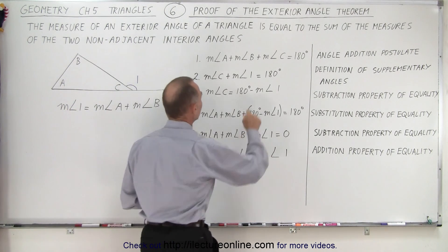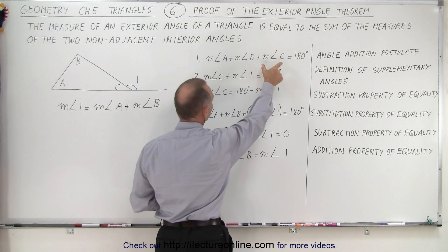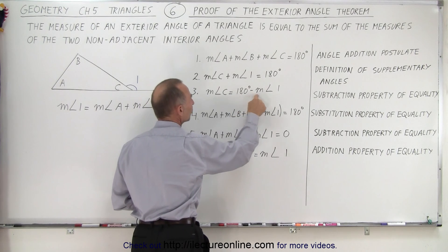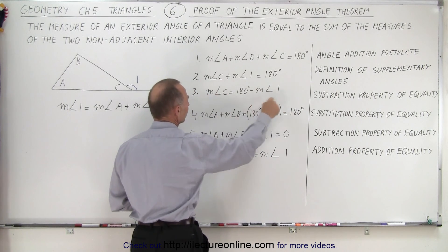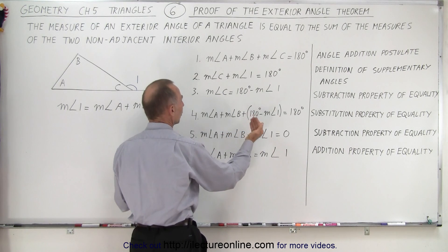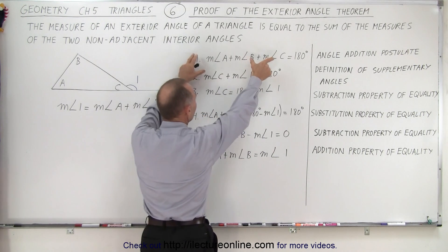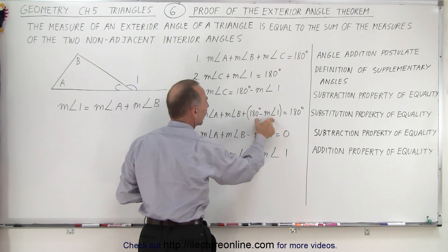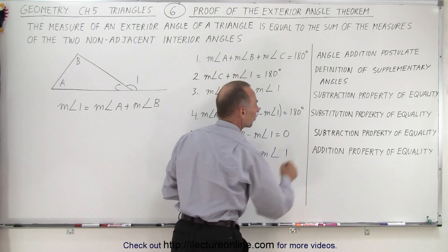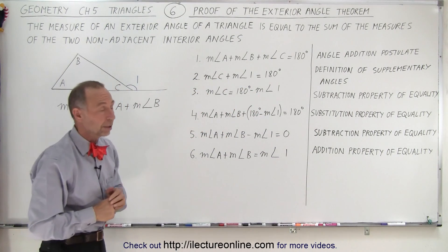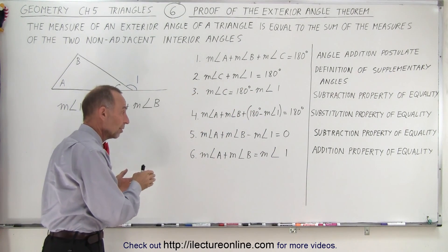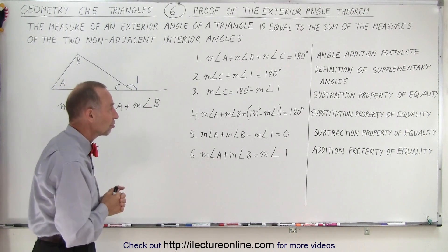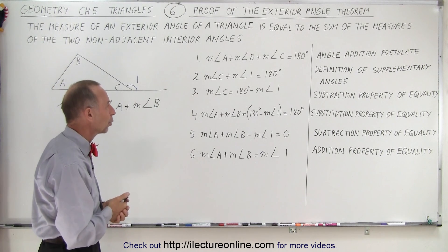Next, we're going to make a substitution in our first equation. Instead of writing the measure of angle C, we're going to substitute that with 180 minus the measure of angle 1, which is what you obtain in statement number 3. So in statement number 4, we take statement number 1 and replace the measure of angle C with 180 degrees minus the measure of angle 1. We can do so because of the substitution property of equality — if we substitute one term in an equation by its equivalent, nothing has changed and the two sides are still equivalent.